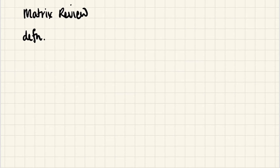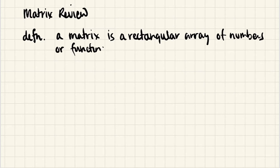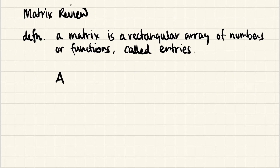A matrix is simply a rectangular array of numbers, or functions, or really anything — and they're called entries. It's just a way of organizing information into a table consisting of rows and columns of entries. We often use a capital letter for a matrix, like capital A. We can refer to specific entries using a subscript style, where the first number is the row and the second number is the column.